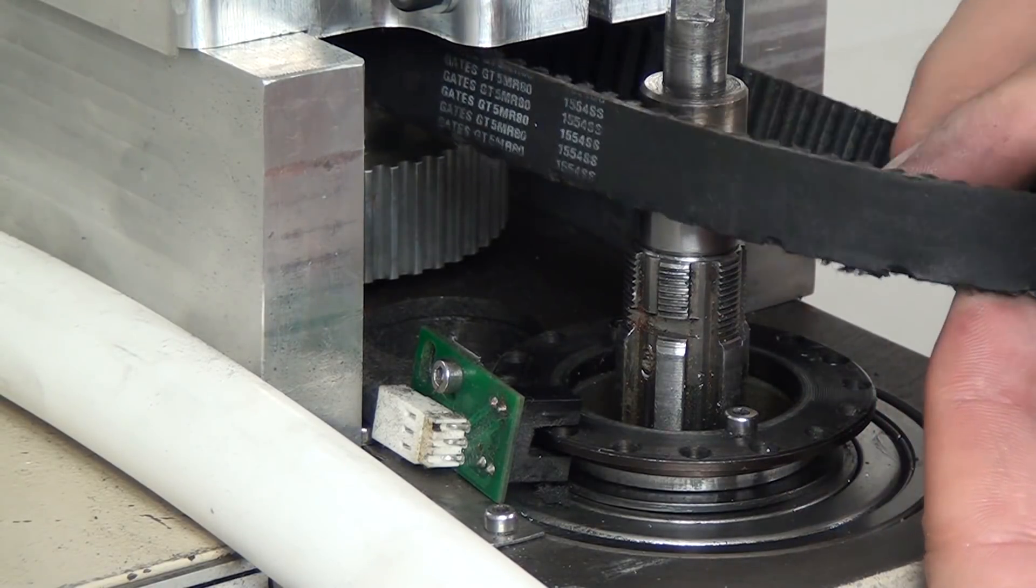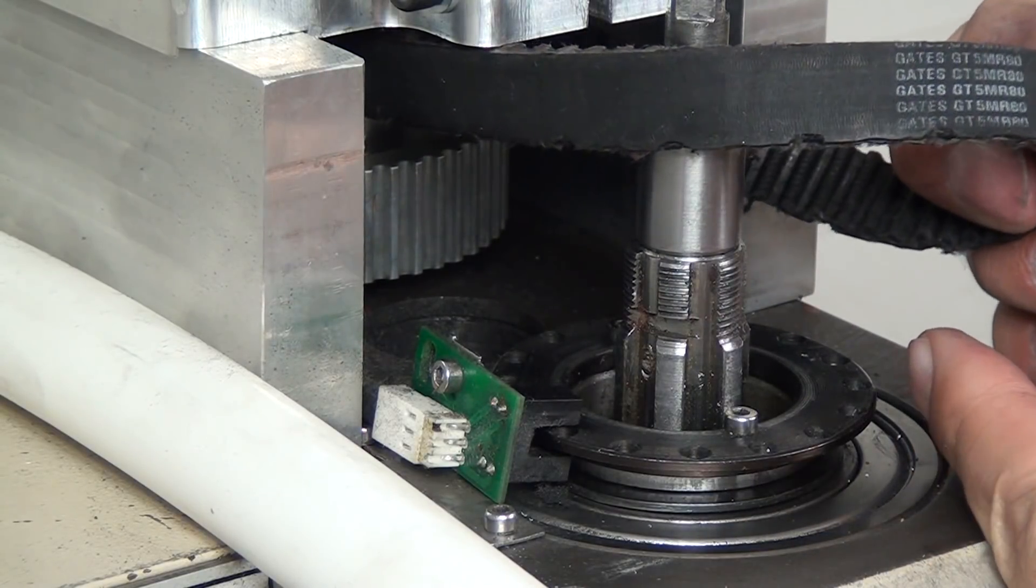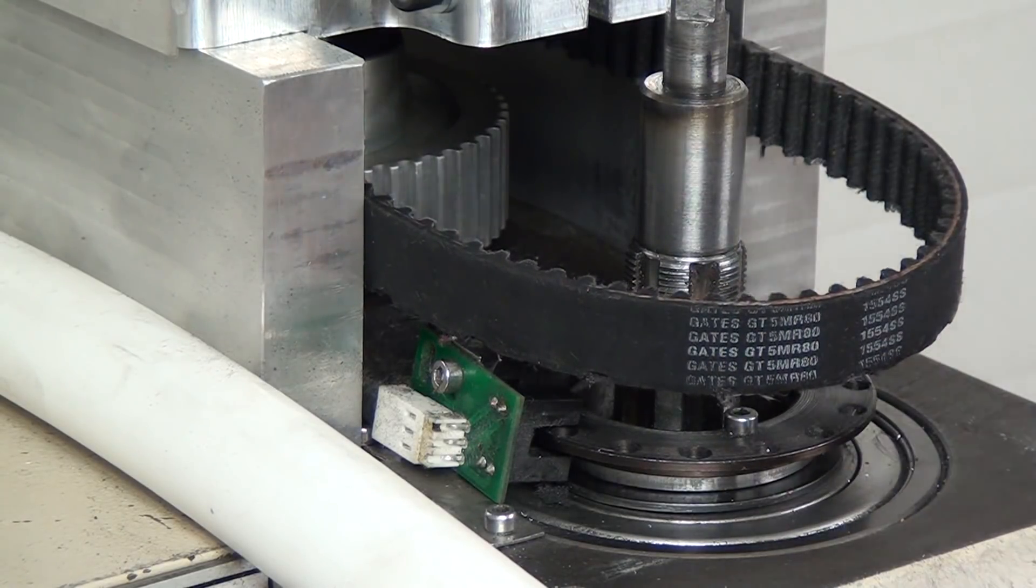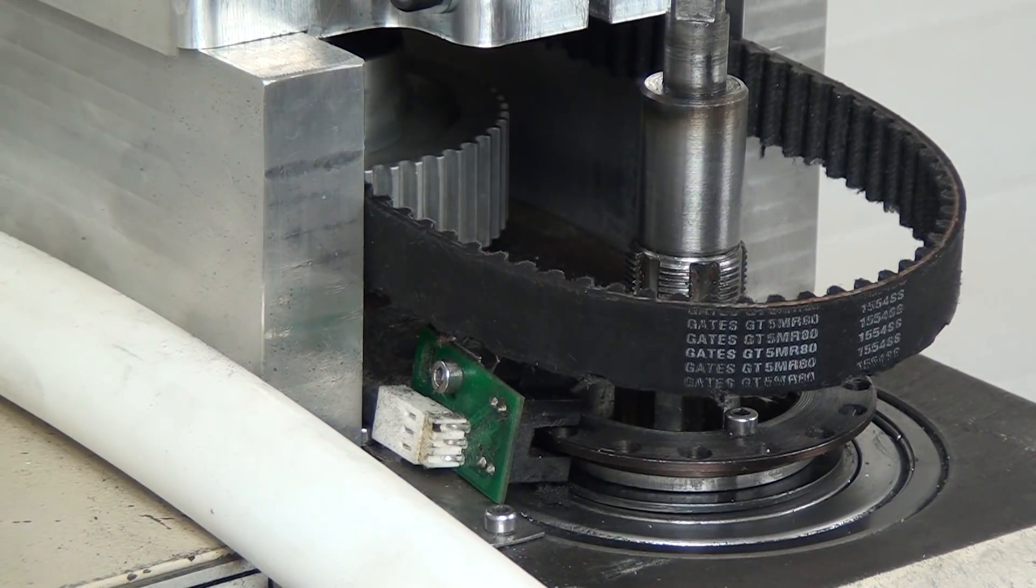You see all these notches in it? Look how tore up that is. So this belt is garbage, and I think that that's what's causing a lot of the howling. I hope that's the problem. I've tried as much tension as I can possibly put on it, a little bit less tension, less tension. I can't seem to get rid of it. The noise is always there.